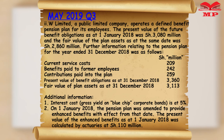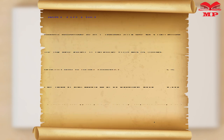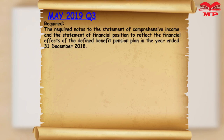Additional information: the interest cost, which is the gross yield on blue chip corporate bonds, is at the rate of five percent. On 1st January 2018, the pension plan was amended to provide enhanced benefits with effect from that date. The present value of the enhanced benefits as at 1st January 2018 was calculated by actuaries as 110 million shillings. We are required to prepare the notes to the statement of comprehensive income and statement of financial position to reflect the financial effect of the defined pension plan for the year ended 31st December 2018.